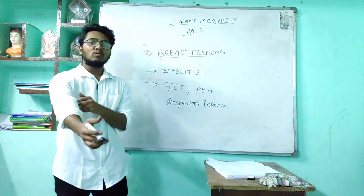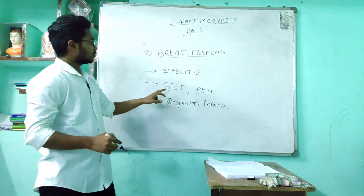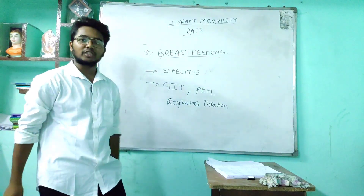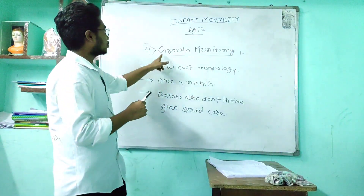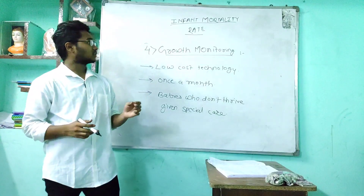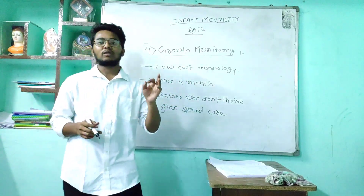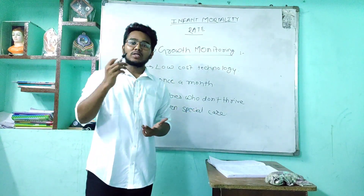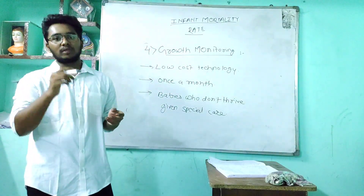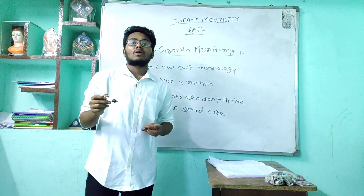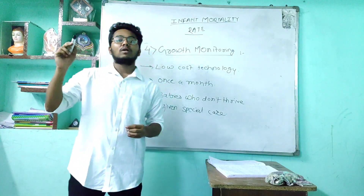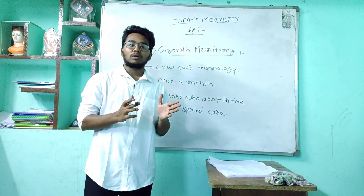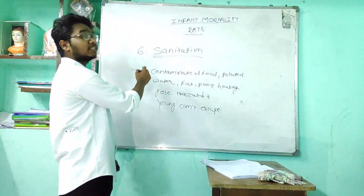Another preventable measure is breastfeeding — it is the most effective measure to control infant mortality rate, protecting children against gastrointestinal infection, protein-energy malnutrition, and respiratory infection. Growth monitoring is a low-cost, effective technology for prevention of infant mortality rate; children are weighed periodically at least once a month and growth charts are maintained. Babies who do not show normal growth curves are given special attention.